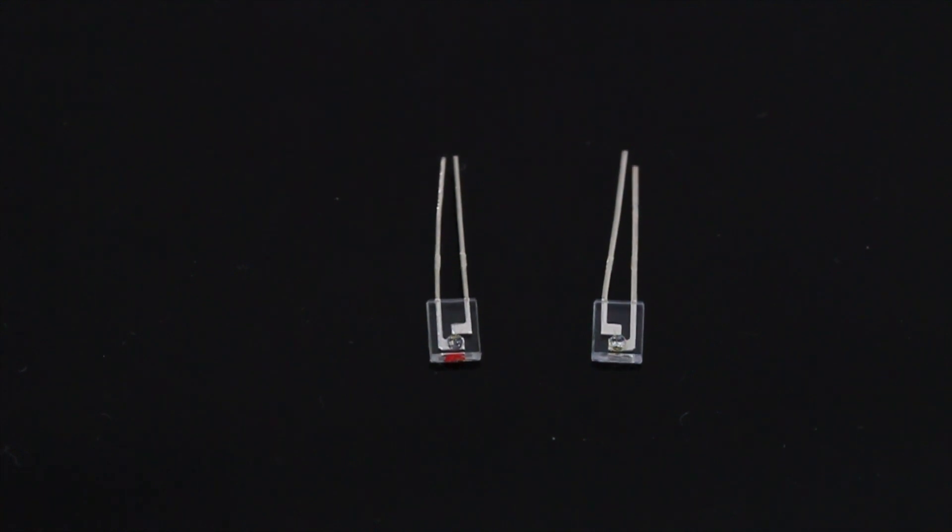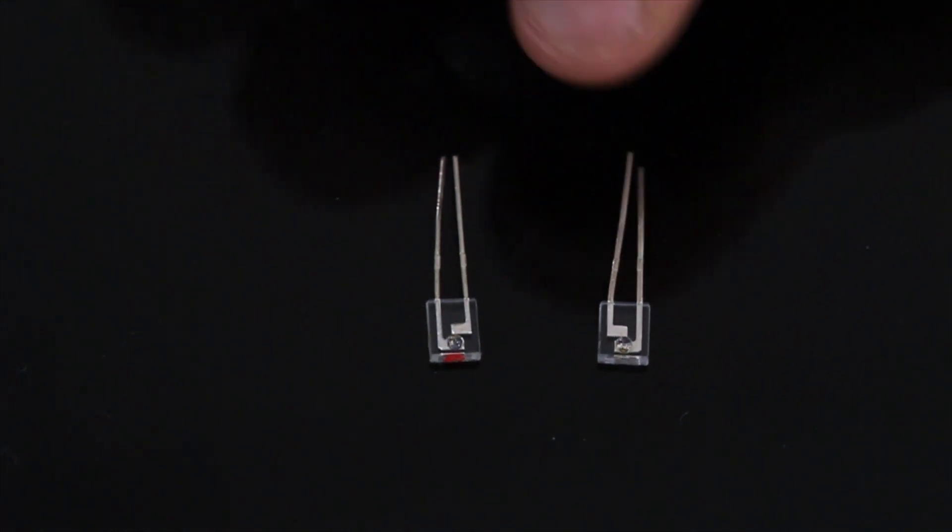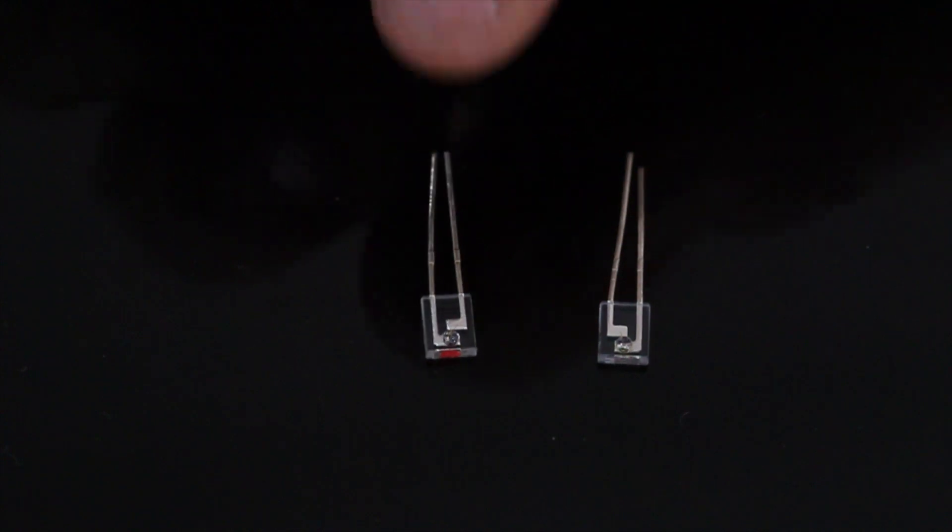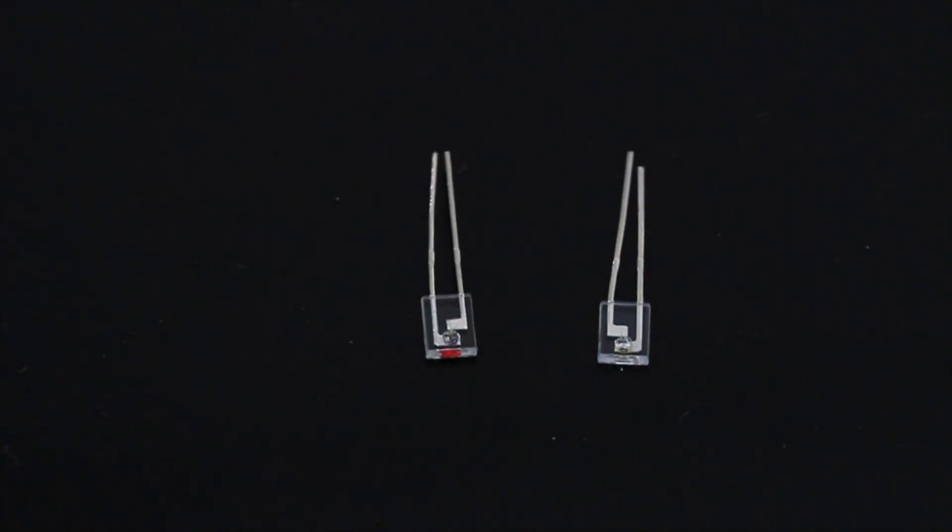If I look at the emitter, it should have a yellow dot on the top, and then my detector has a red dot. That's how I can tell which one is which when I pull them out of the bag, because they're tiny and they look almost exactly the same.